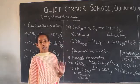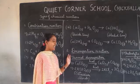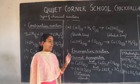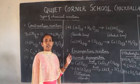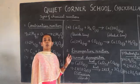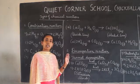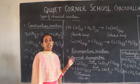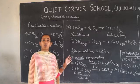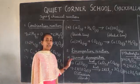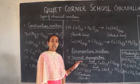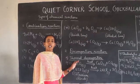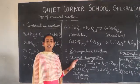So this is called a combination reaction. Next is decomposition reaction. Decomposition reaction means a single reactant decomposes to form more than one product. There are three types of decomposition reactions: thermal decomposition reaction, electrolytic decomposition reaction, and photolytic decomposition reaction. Thermal means related to heat — a single reactant decomposes into more than one product in the presence of heat.